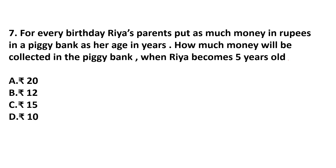For every birthday, Rhea's parents put as much money in rupees as her age. That means at her first birthday they put 1 rupee, on the second birthday 2 rupees, and so on. So if we add 1 to 5: 1 plus 2 plus 3 plus 4 plus 5, the total is 15. So on her fifth birthday, there will be 15 rupees. Answer is option C.